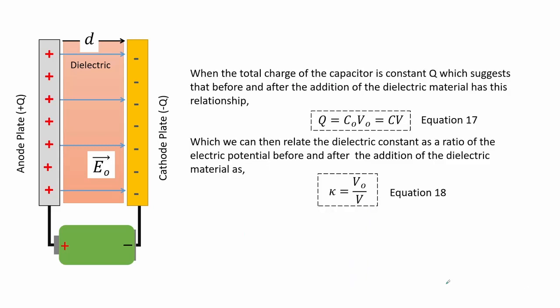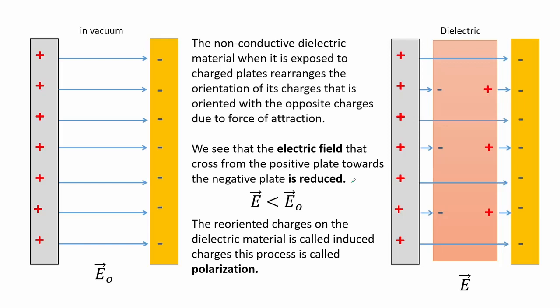When the total charge Q of the capacitor is constant — meaning before and after the addition of the dielectric — this relationship is shown by equation 17. We can then relate the dielectric constant as a ratio of the electric potential before and after the addition of the dielectric material, as shown in equation 18. The non-conductive dielectric material, when exposed to charged plates, rearranges the orientation of its charges opposite to the field due to the force of attraction, reducing the electric field crossing from the positive to the negative plate. These reoriented charges are called induced charges. The dielectric material remains neutral since the number of positive and negative charges are the same but only reoriented.